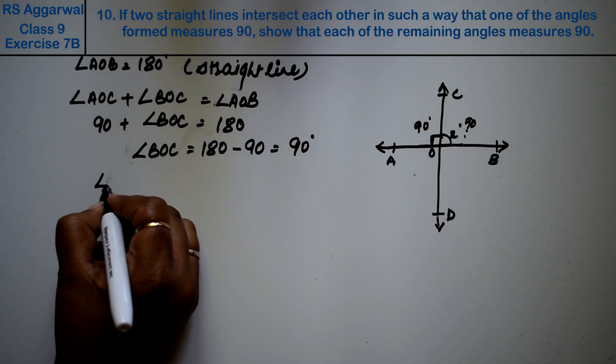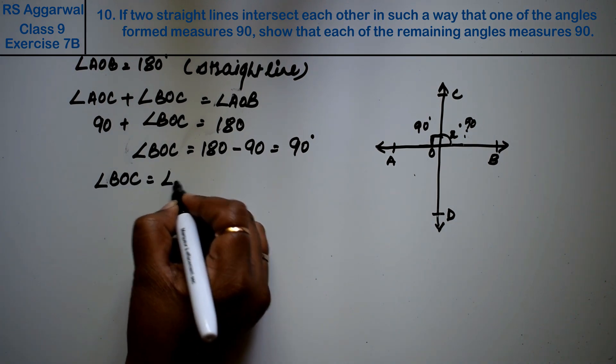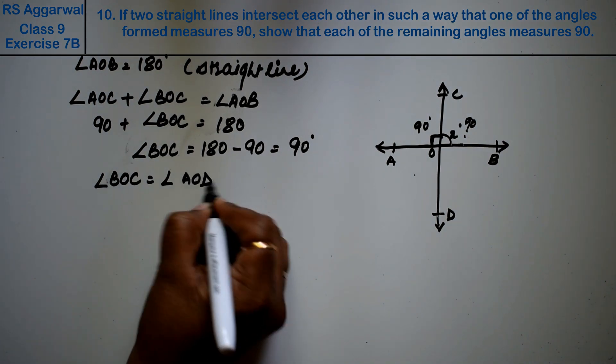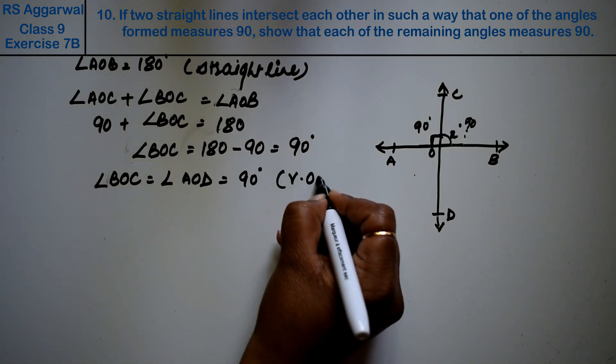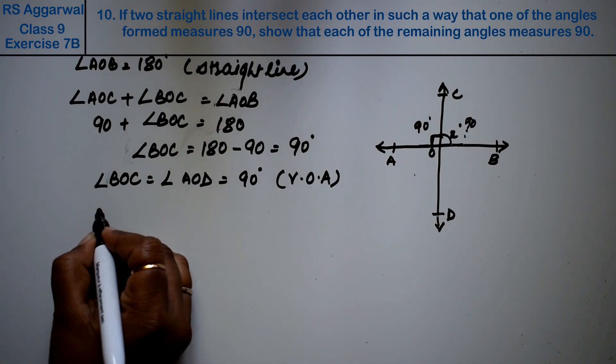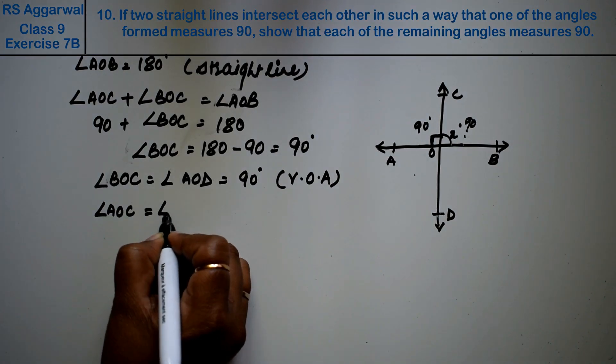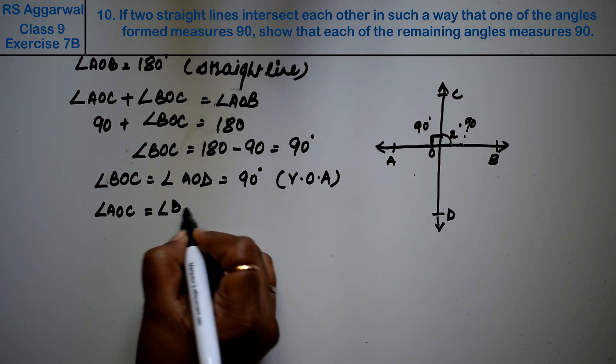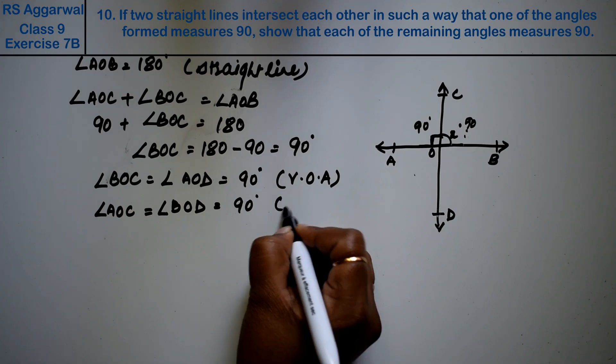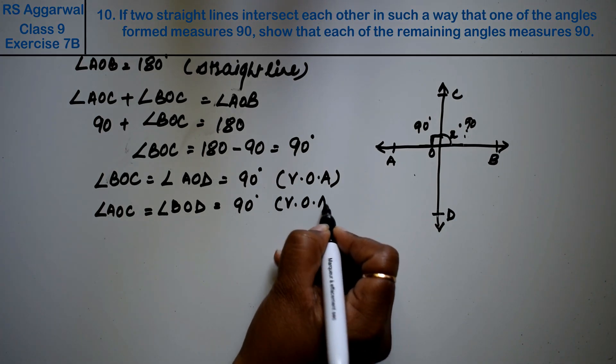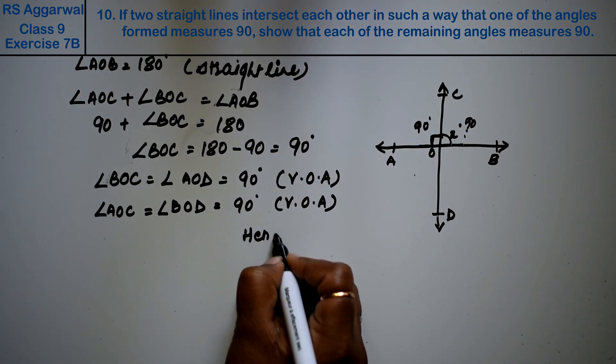These are vertically opposite angles. So angle BOC equals angle AOD, which is 90 degrees, because vertically opposite angles are equal. Similarly, angle AOC equals angle BOD, which is 90 degrees, because vertically opposite angles are equal. Hence proved.